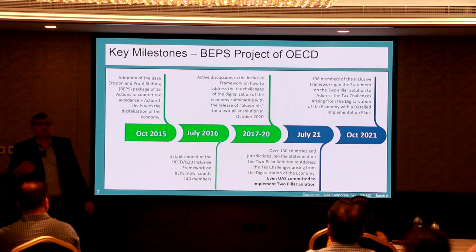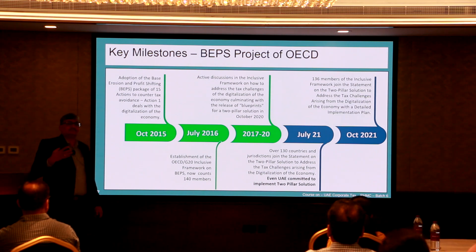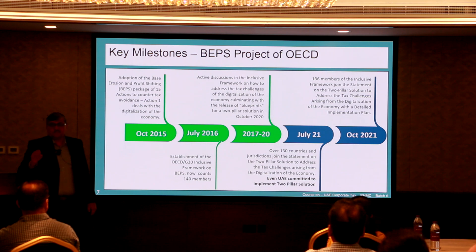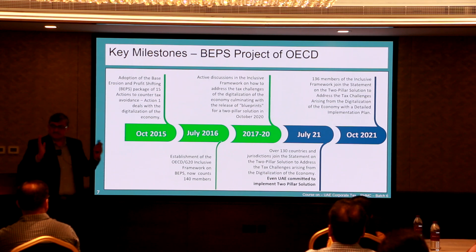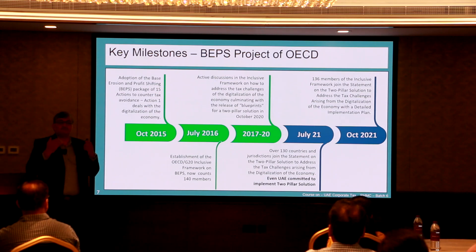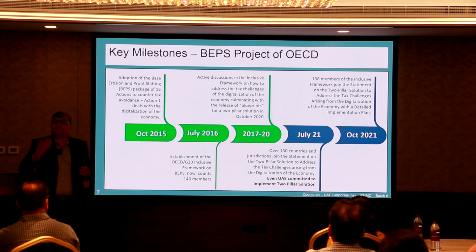The two pillar approach essentially deals with the shortcomings of the current tax system — the local domestic tax laws and international tax treaties put together. What they are not able to address through the current system is what they want to address through the two pillar solution.